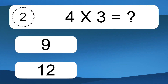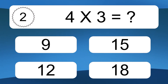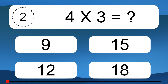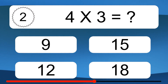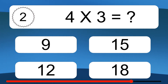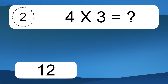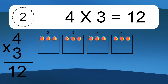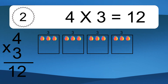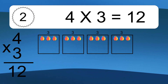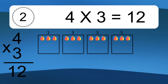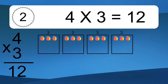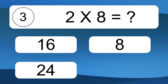4 times 3 equals what? 4 times 3 equals 12. We have 4 boxes, and each box has 3 colorful balls inside. If you count all the balls in all the boxes together, you will have 4 times 3 balls. This equals 12 balls.